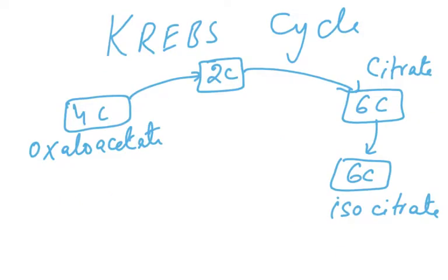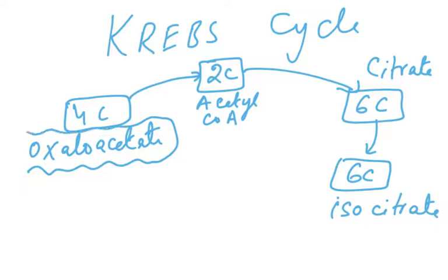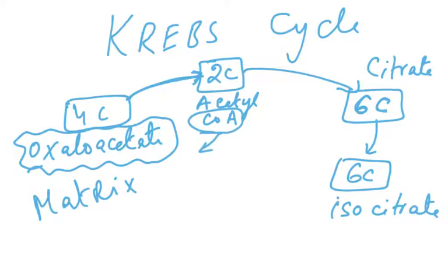In the Krebs cycle, the two-carbon acetyl-CoA from the link reaction combines with four-carbon oxaloacetate, which was already present in the matrix of the mitochondrion. The four carbon combines with two carbon to form six-carbon citrate. An enzyme is needed for this, and the coenzyme A is released — it is the two-carbon acetate that was brought to the Krebs cycle by combining with coenzyme A.